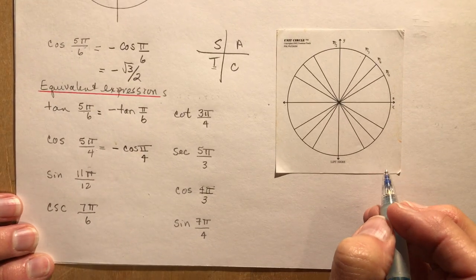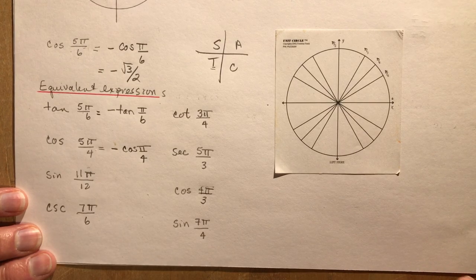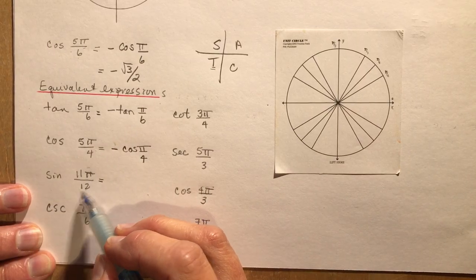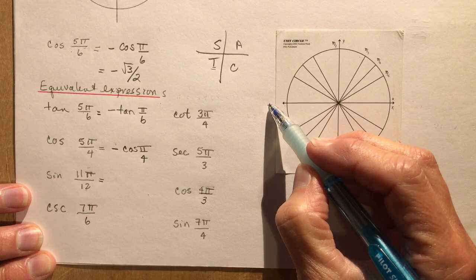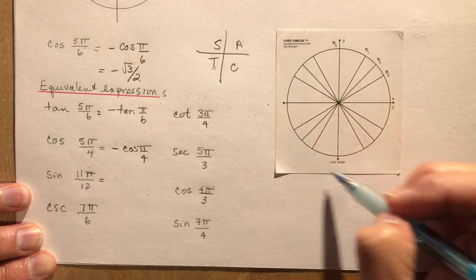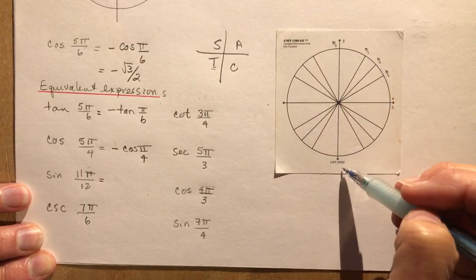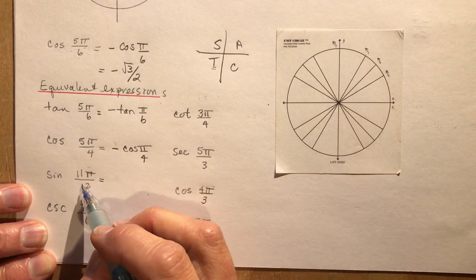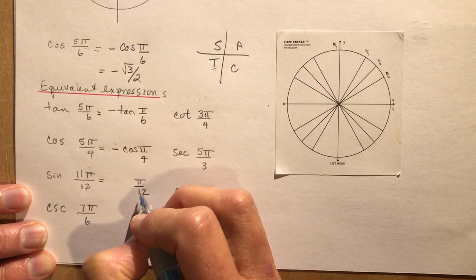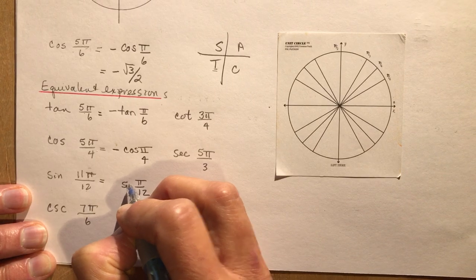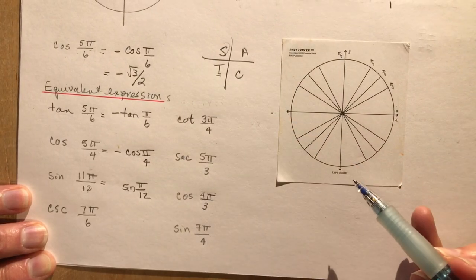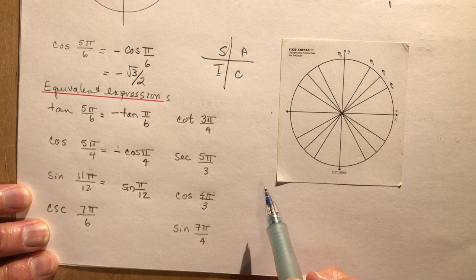Try these on your own, then come back. For sin(11π/12): since 12π/12 is π and 24π/12 is 2π, 11π/12 is just before π, landing in the second quadrant. The related acute angle is π/12, and since sine is positive in quadrant 2, the equivalent expression is positive sin(π/12).